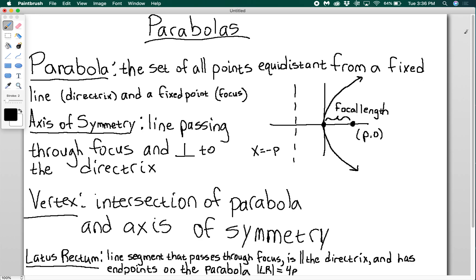The axis of symmetry of a parabola is the line passing through the focus and perpendicular to the directrix. So the axis of symmetry would be this right here, the x-axis, basically. And then we have the vertex, which is the intersection of the parabola and the axis of symmetry. So the vertex is here as a dot.